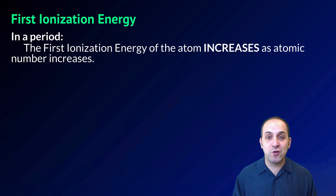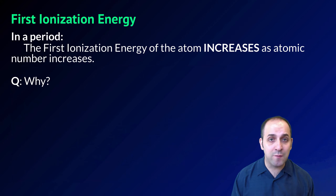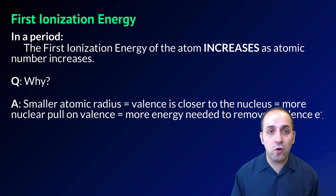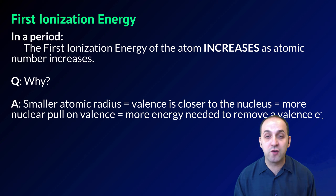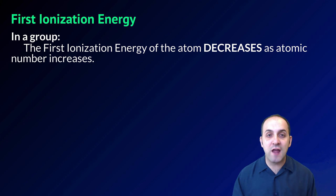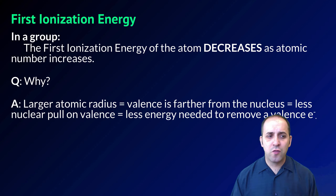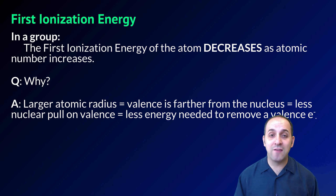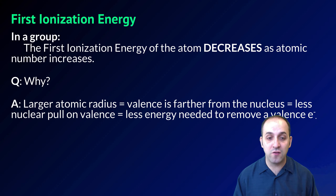In a period, first ionization energy increases as atomic number increases for reasons very similar to electronegativity: the smaller the atomic radius, the closer the valence electrons are to the nucleus, and so the more nuclear pull there will be on those valence electrons. As a result, we need to invest more energy to remove a valence electron. Within a group, first ionization energy decreases as atomic number increases because the larger atomic radius places valence electrons farther from the nucleus, meaning less nuclear pull on the valence electrons and less energy needed to remove one.